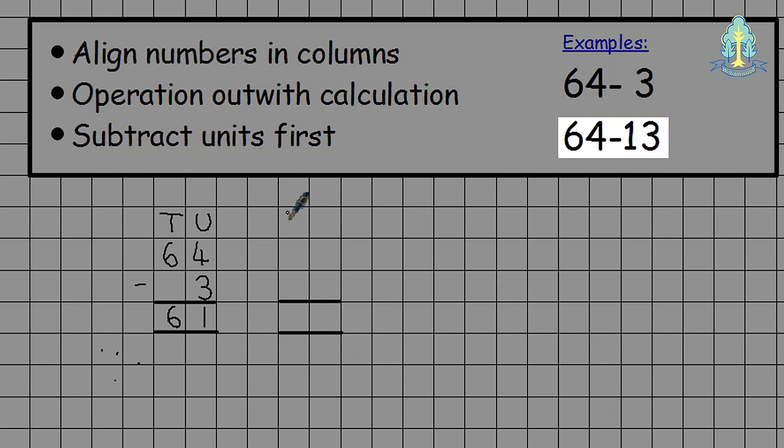Children then progress to subtracting tens and units from tens and units. We encourage them to use the headers once again of T and U to align the columns. With the largest number above, 64 take away 13. We begin by subtracting the units, 4 take away 3 is 1 and move to the tens column, 6 take away 1 is 5, giving us an answer of 51.